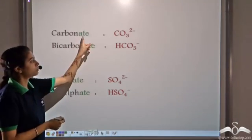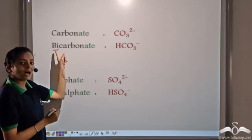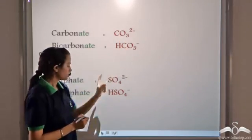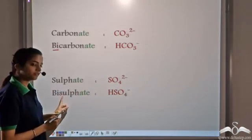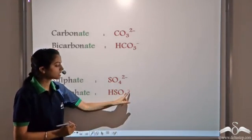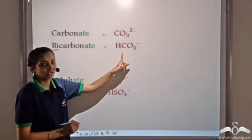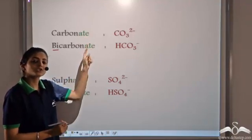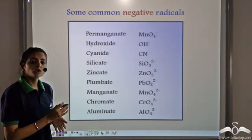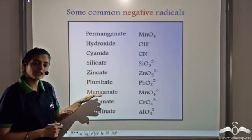Let's look at some other radicals. The carbonate radical is CO3 2- and the bicarbonate radical is HCO3-. Whenever you see 'bi' added before the name of a radical, that always shows the presence of a hydrogen atom before the radical. For example, the sulphate radical is SO4 2-, and the bisulphate radical has hydrogen present before SO4, making it HSO4-. Most radicals are negative radicals; only a few like ammonium are positive radicals.